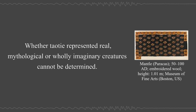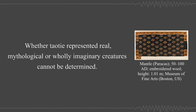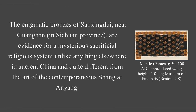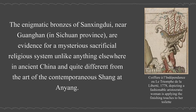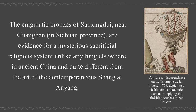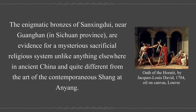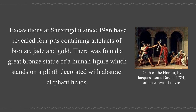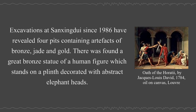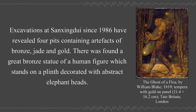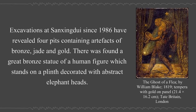Whether Taotie represented real, mythological, or wholly imaginary creatures cannot be determined. The enigmatic bronzes of Sanxingdui, near Guanghan in Sichuan province, are evidence for a mysterious sacrificial religious system unlike anything elsewhere in ancient China. Excavations at Sanxingdui since 1986 have revealed four pits containing artifacts of bronze, jade, and gold. A great bronze statue of a human figure was found, which stands on a plinth decorated with abstract elephant heads.